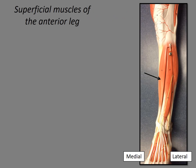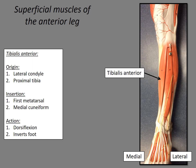Now we're looking at the superficial muscles of the anterior leg. The first muscle, indicated by the arrow, is the tibialis anterior — a muscle that sits in front of, or anterior to, the tibia, just as we predicted. This is a muscle responsible for origin, insertion, and action. The origin is the lateral condyle and the proximal tibia. The insertion is the first metatarsal and also the medial cuneiform. The action is to dorsiflex and invert the foot.